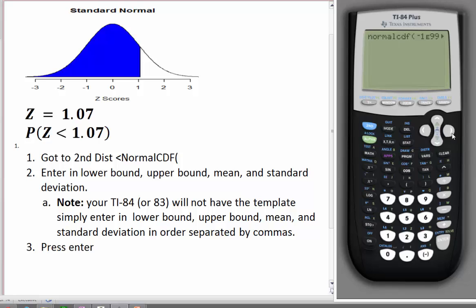where our command will come up as normalcdf. You'll enter in your lower bound, separated by a comma. The comma button is right here. Then the upper bound, then your mean, and your standard deviation. So again, if you have an older calculator, you will not have the template. You'll have to go to this step right here. Then just simply press Enter.